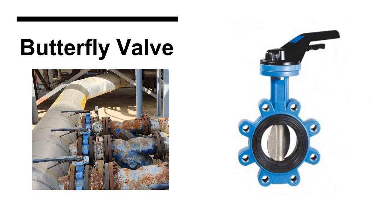Butterfly valves are not typically used in refrigeration systems; however, they are frequently used to control the flow of secondary coolants such as glycol solutions. Butterfly valves are generally designed for bi-directional fluid flow. Typically, they are installed so that the handle is parallel to the disc, with the handle pointing along the line of fluid flow. Like ball valves, they are either fully open or fully closed and require a quarter turn to operate.